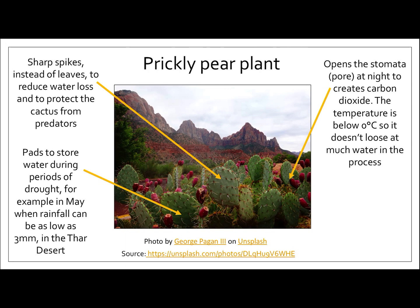Here's a really cool fact about the prickly pear plant. The stomata — which is essentially like a pore in the plant — only opens at nighttime, which allows carbon dioxide to be taken in. Because the temperature is below zero at night, it means that the plant doesn't lose as much water. So if the stomata opens at night, the plant doesn't lose as much water and can continue to grow and survive in the desert.